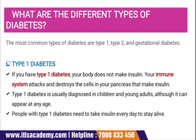Now, what are the different types of diabetes? There are different types of diabetes: Type 1 diabetes, Type 2 diabetes, and Gestational diabetes. Let's talk about each in detail.